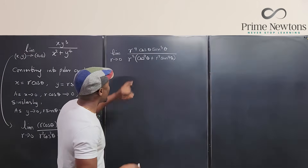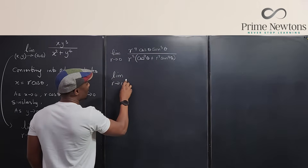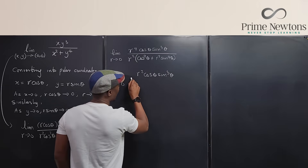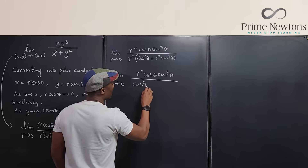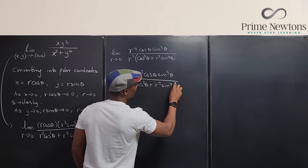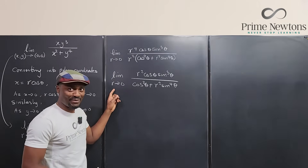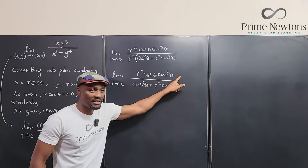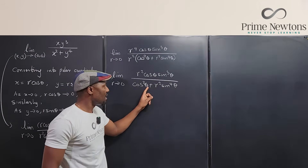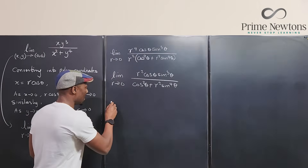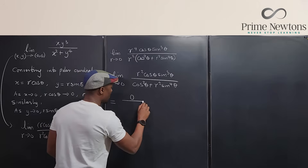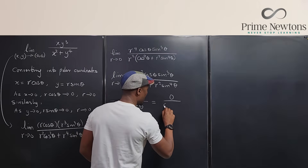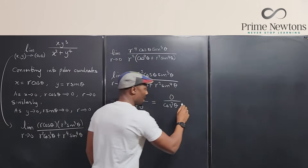Simplifying — canceling r squared — we end up with the limit as r approaches zero of r squared cosine theta sine cubed theta over cosine squared theta plus r squared sine to the fourth theta. Now let's try plugging in r equals zero: the numerator gives zero times anything, which is zero; the denominator gives cosine squared theta plus zero. So we end up with zero over cosine squared theta.